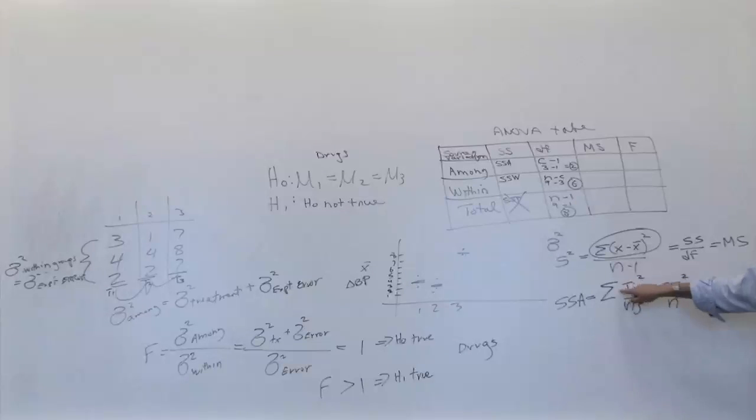You square it and then add them all together after dividing by the sample size. Now what does the nj stand for? The nj stands for the sample size of each particular column. In this case, it's 3, 3, and 3. Some other example might be 3, 3, and 4, or 5, 5, and 6. It doesn't have to be the same number.